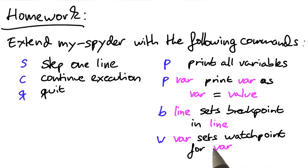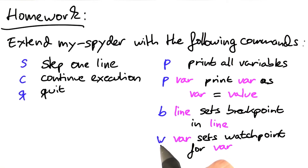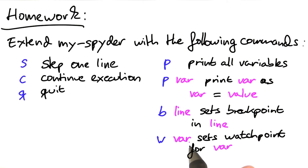And finally, a special command — and especially useful. If you type in W for watchpoint, or anything that starts with W such as 'watch', and give a variable name as argument, then the program should stop whenever that variable changes its value.